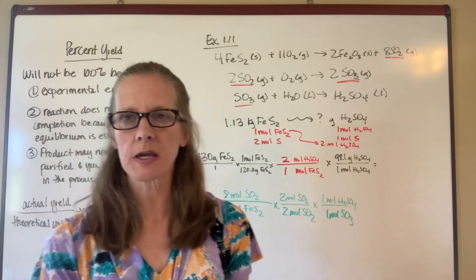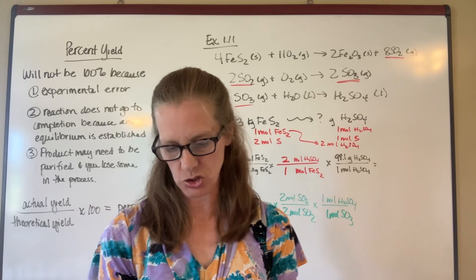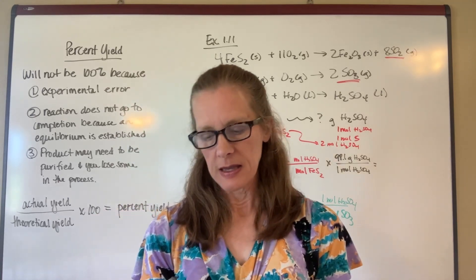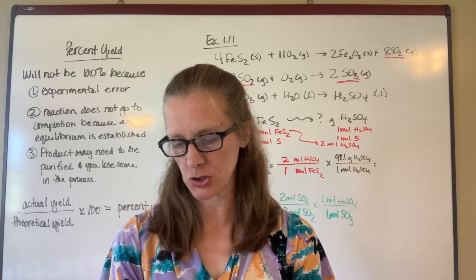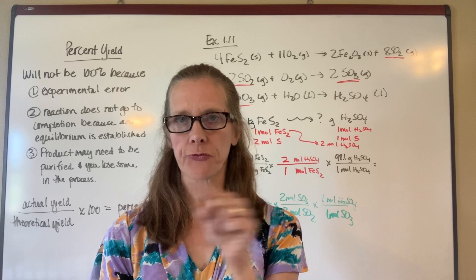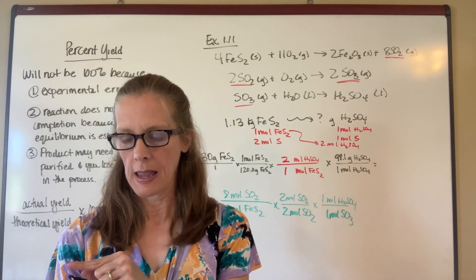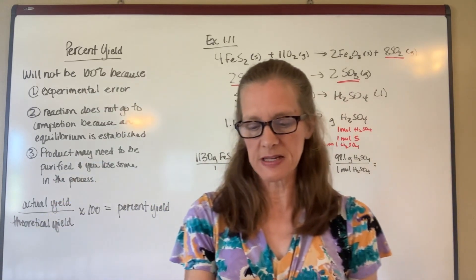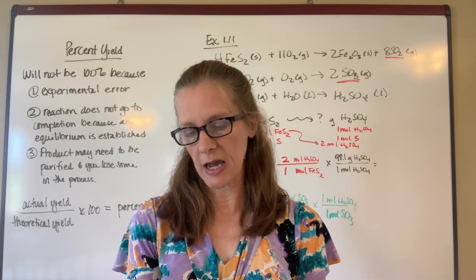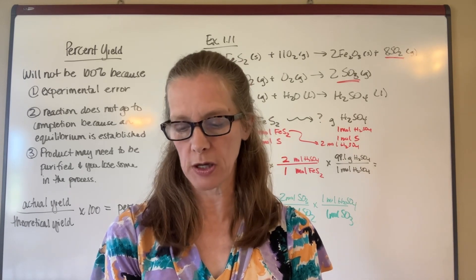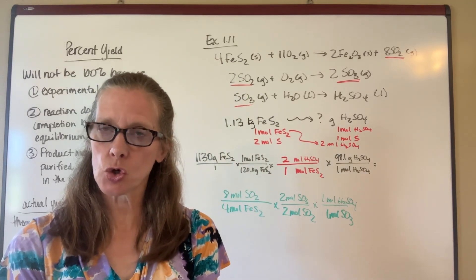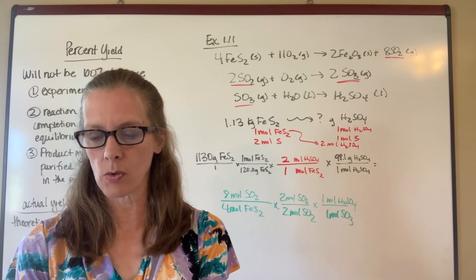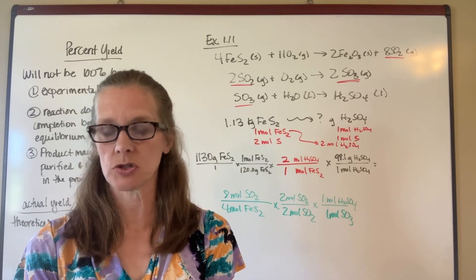Practice problem number 10 is talking about the production of nitric acid, and they give us a series of reactions. Nitric acid is manufactured industrially with the following sequence of reactions. In this process, the NO made in the last reaction is recycled back into the second reaction. You can mark the 4NO on the product side of the first reaction and the 2NO on the reactant side of the second one. The problem states that all of the NO produced is recycled back, so when the manufacturing process is complete, essentially no NO remains. The NO₂ in the second reaction is going to be used up in the third reaction.